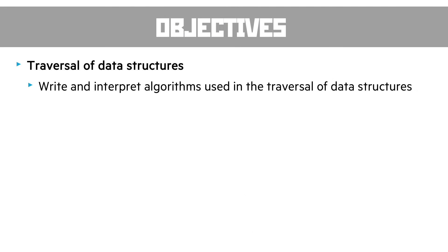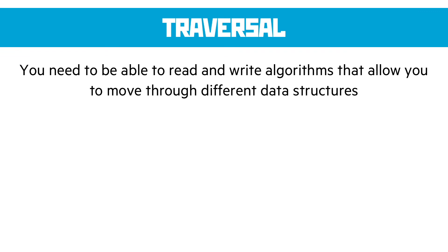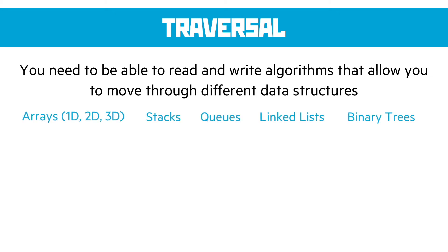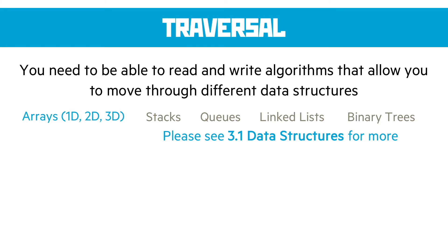Traversal of data structures is a reasonably large section on its own. You need to be able to read and write algorithms that move through different data structures. One of our units is all about data structures — there are many to choose from: 1D, 2D, and 3D arrays, stacks, queues, linked lists, and binary trees. For stacks, queues, linked lists, and binary trees, go and look at section 3.1 data structures for more detail — they're covered in much more depth there. The examples here focus on 1D, 2D, and 3D arrays.